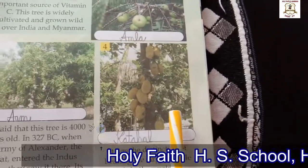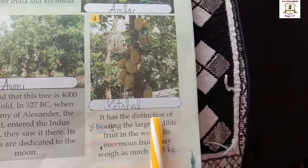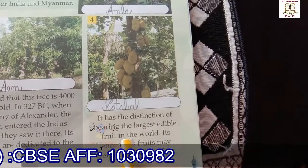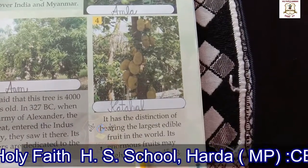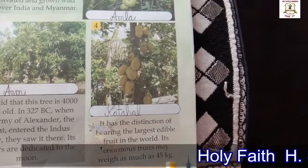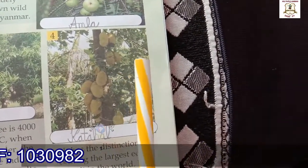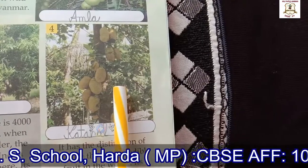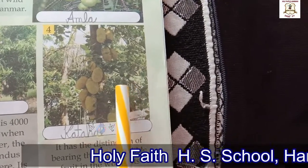Look at picture number four. It has the distinction — meaning excellence — of bearing the largest edible fruit in the world. Its enormous — meaning very large — fruits may be as much as 45 kg. The name of this Indian tree is Kathal. Kathal has the distinction of bearing the largest edible fruit, and the weight of this fruit can be as much as 45 kg.